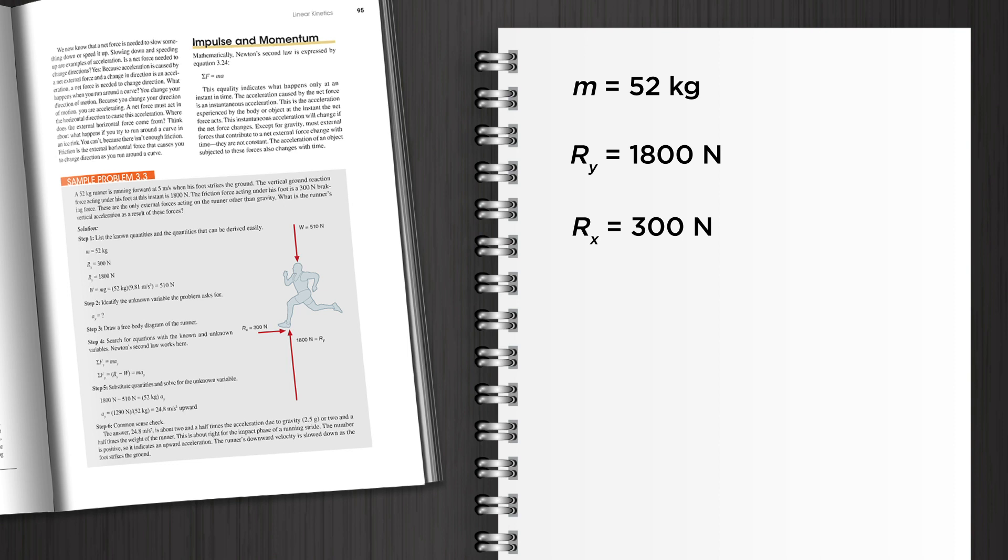We can also determine the weight of the runner in newtons by multiplying the runner's mass, 52 kilograms, by the gravitational constant, 9.81 meters per second squared. The weight of the runner is 510 newtons.